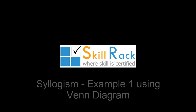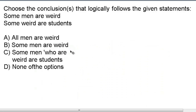Let's solve a syllogism problem using Venn diagram. We have to choose the conclusions that logically follow the statements: 'Some men are weird' and 'some weird are students.'